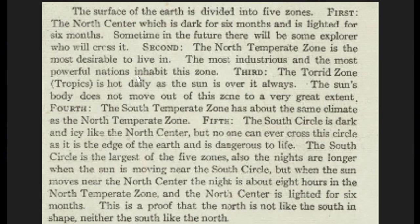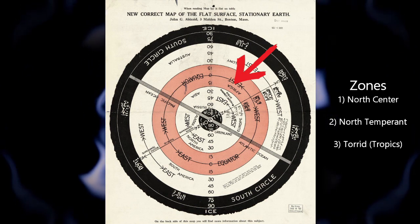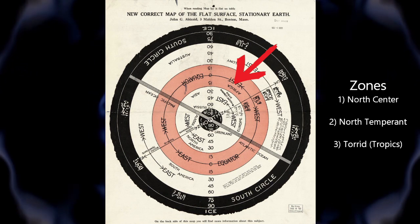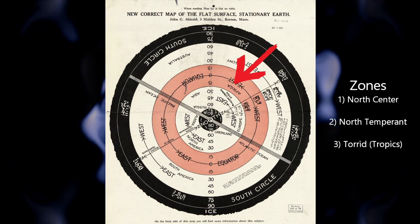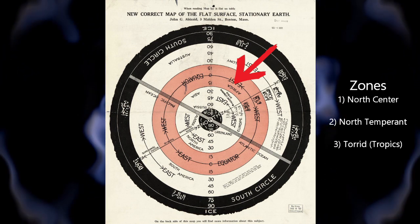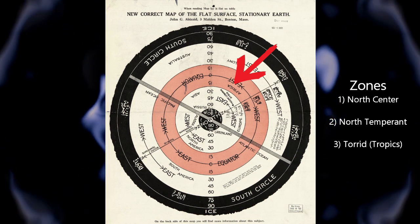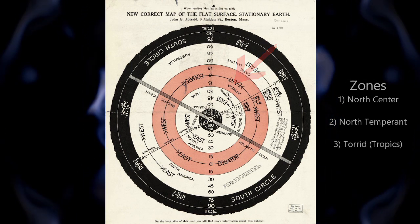The third zone is the torrid zone, or the tropics — as hot daily as the sun is over it always, and the sun's body does not move out of that zone to a very great extent. On the map, this is the reddish-pinkish colored area where your equator is. It's going to have hotter temperatures because the sun moves between the tropics in that zone all year round, giving you tropical temperatures and higher temps yearly. That makes perfect sense.